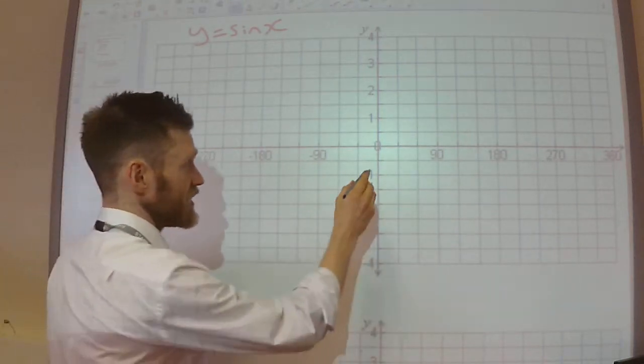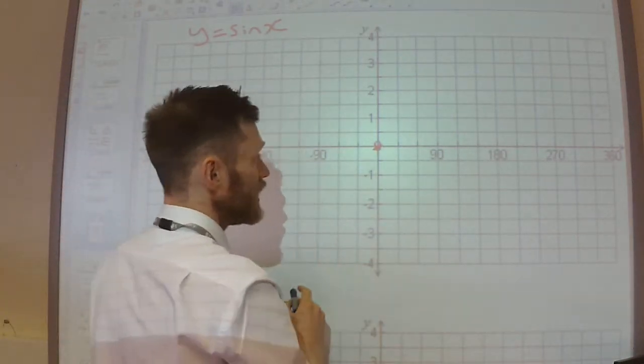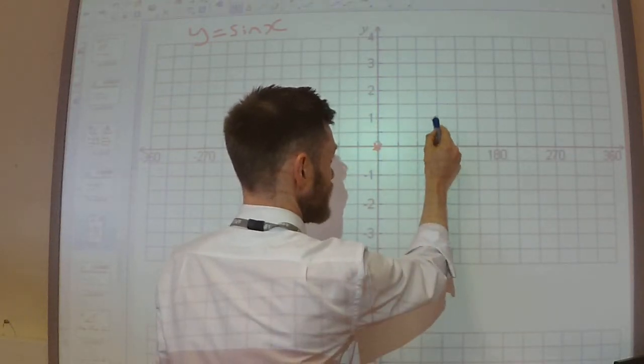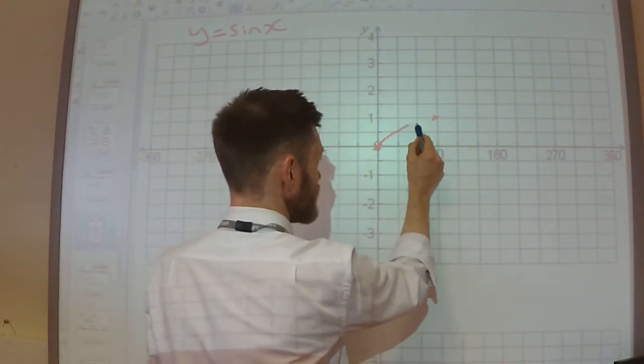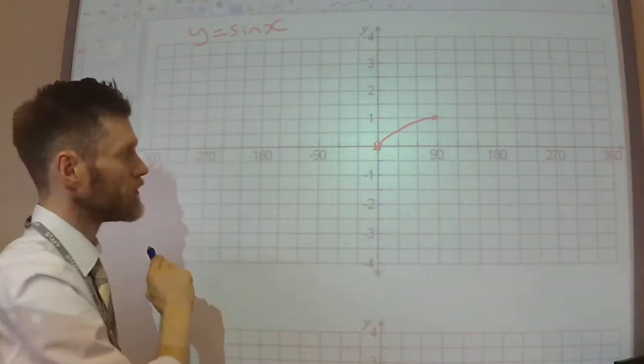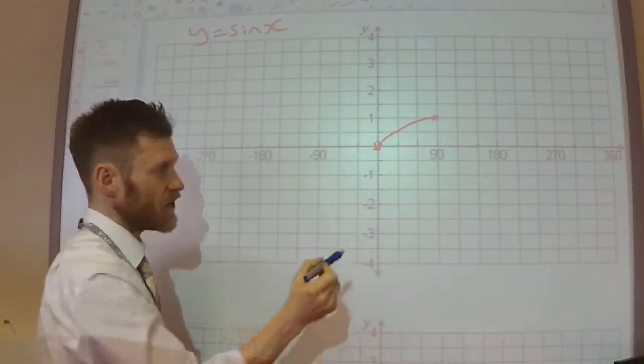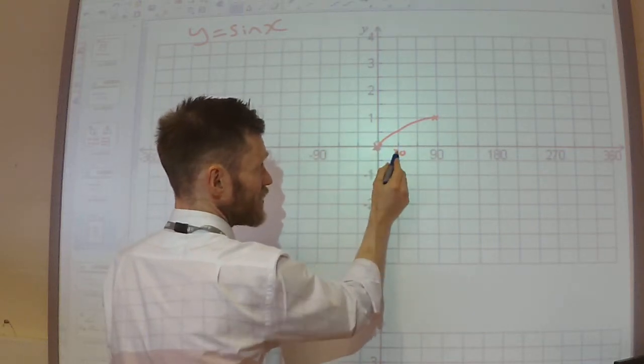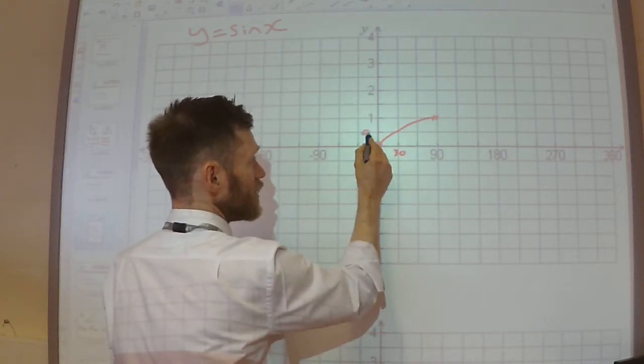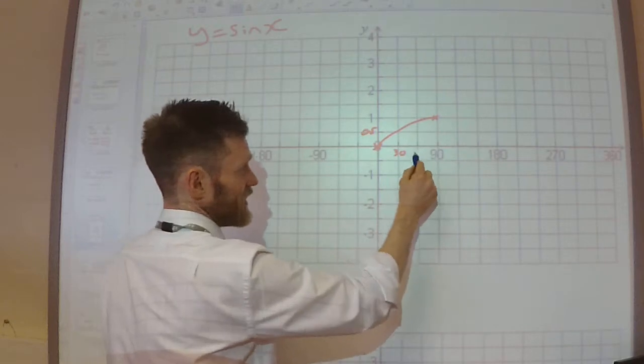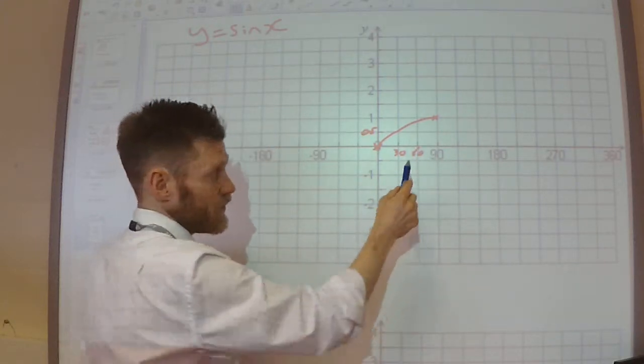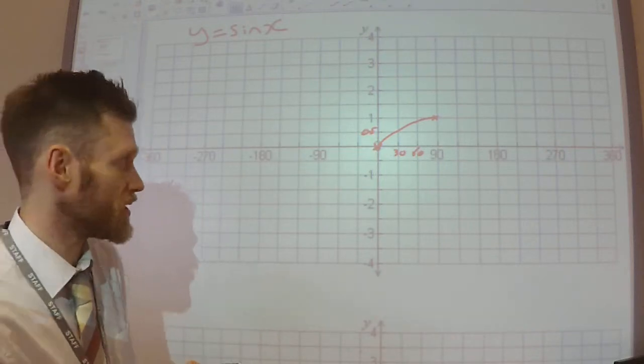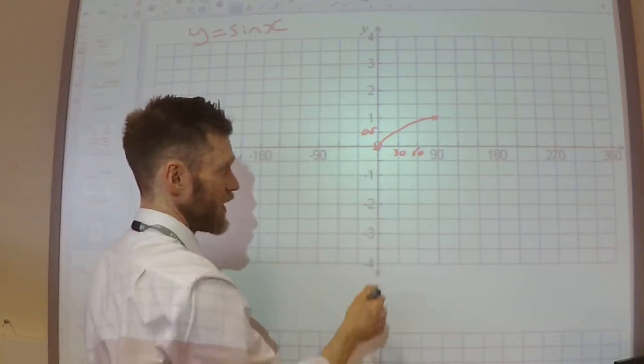So we know that sine starts at 0 and it goes up to 1 at 90 degrees, something like that. If you wanted to, you could fill in these other numbers. We know that sine 30 is a half, and we know that sine 60 is root 3 over 2. Watch the previous video if you're not sure about where I got those numbers from. So we could fill in these ones as well.